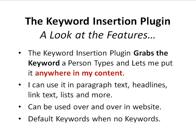It works by grabbing the keyword a person types and letting you put it anywhere into your content — inside a page or post. You can use it as paragraph text, in headline format such as H1, H2, H3, in link text, in lists, and in quotes. You can use it anywhere within the page or post editor in WordPress, and you can use it over and over again, setting up different instances for each keyword you want to target.